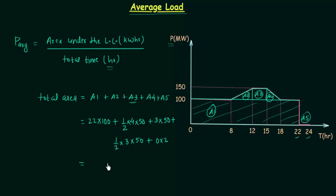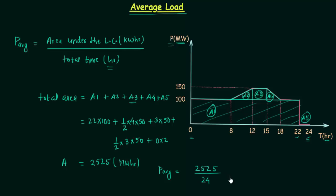Once you complete the calculation you get a total area of 2525 megawatt hours. Now to find average power, divide the total area by the total time of 24 hours. So average power equals 2525 divided by 24, which equals 105.2 megawatts. The unit is megawatts because the megawatt hours unit divided by hours leaves megawatts.